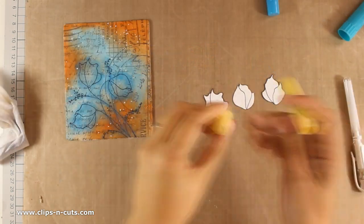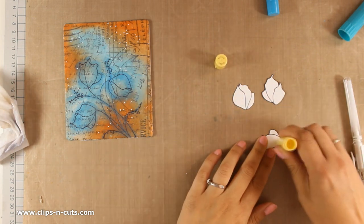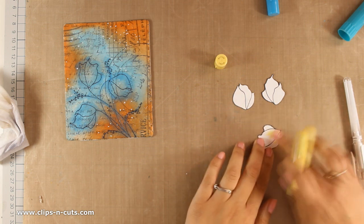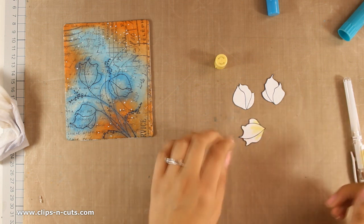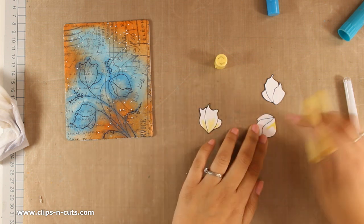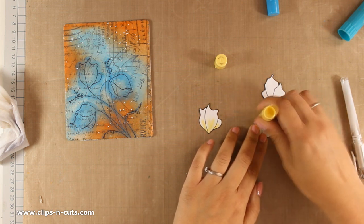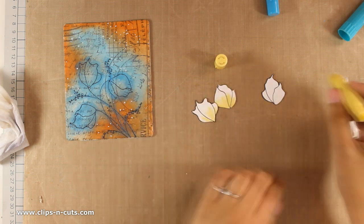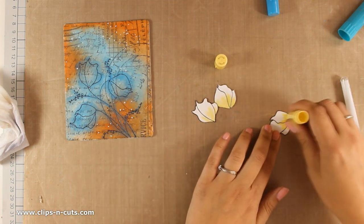I have also washed my hands just to make sure that I don't add any bluish color on my flowers. I am using this yellow gelato, applying a little bit and smudging it with my fingers only at the base of the petals.